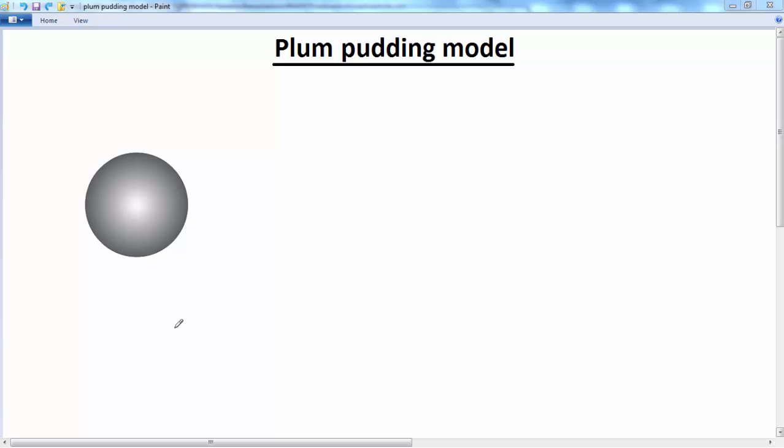In the next two lessons, we're going to look at various models for the atom, finishing off with the Rutherford model and the Geiger-Marsden experiment. But before we do that, in this lesson we're going to look at what is known as the plum pudding model.